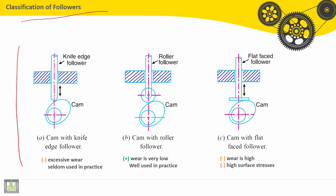We have many types of cams according to followers with advantages and disadvantages. We will start by the first one, cam with knife edge follower. This is called knife edge follower. The disadvantage of this type of follower is excessive wear, seldom used in practice.